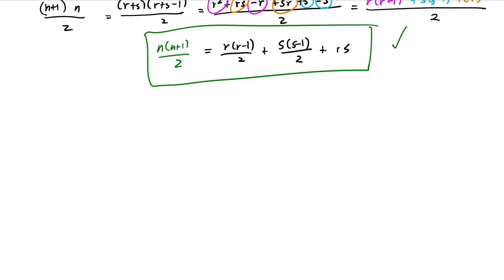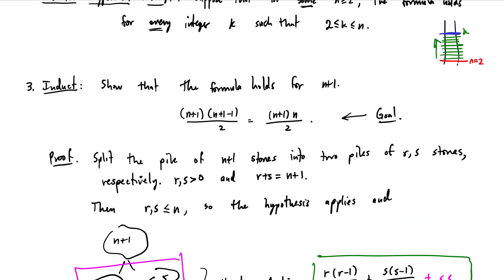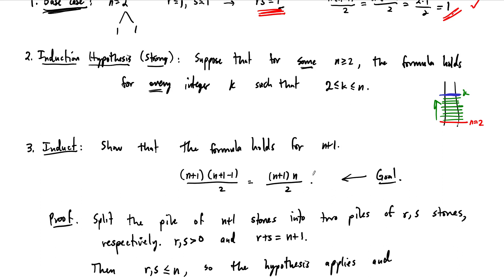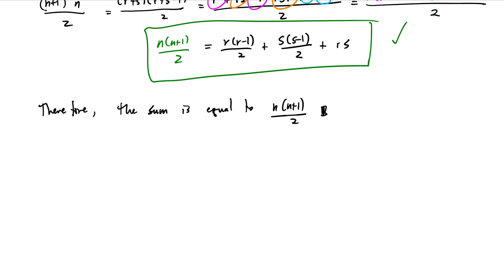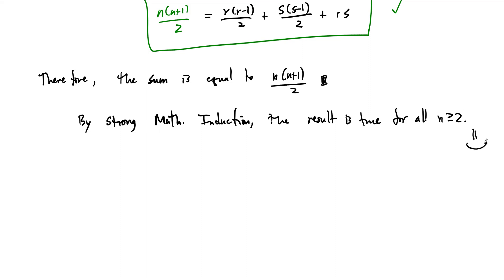Since these are the same, our conclusion is true: the sum equals n(n+1)/2. That finishes the proof — our job was to go from the nth step to the (n+1)st step and get the formula. We achieve the goal, and therefore by strong mathematical induction, the result is true for all n greater than or equal to 2.